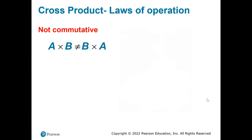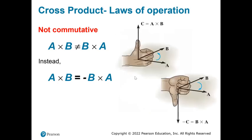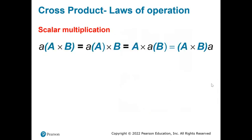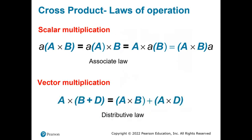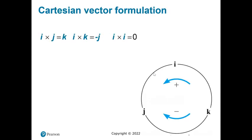The cross product does not follow the commutative law: A cross B is not equal to B cross A — instead it reverses direction. However, scalar multiplication is valid, and the cross product satisfies the associative and distributive laws for vector addition.